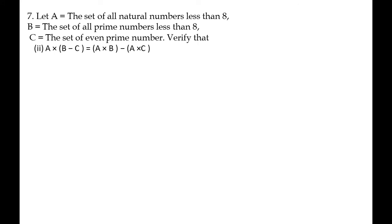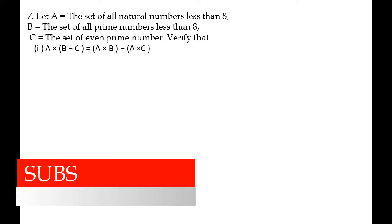Let A equal the set of all natural numbers less than 8, B equal the set of all prime numbers less than 8, C equal the set of even prime numbers. Verify that A × (B - C) = (A × B) - (A × C).